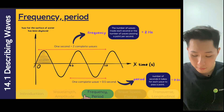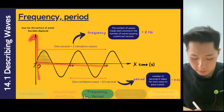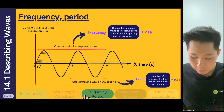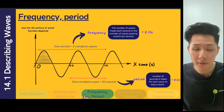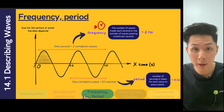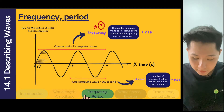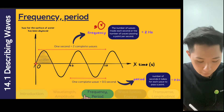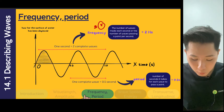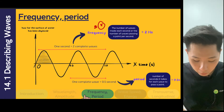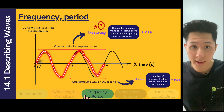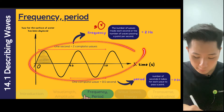If you switch the graph into a displacement versus time graph, in the previous example we had displacement and distance. But if the x-axis changes into time, there are a few more definitions. First is called frequency, something we already learned in the chapter on sound. Frequency is the number of complete waves in one second. In the example shown, there are two complete waves in one second, so the frequency of the wave is two hertz.